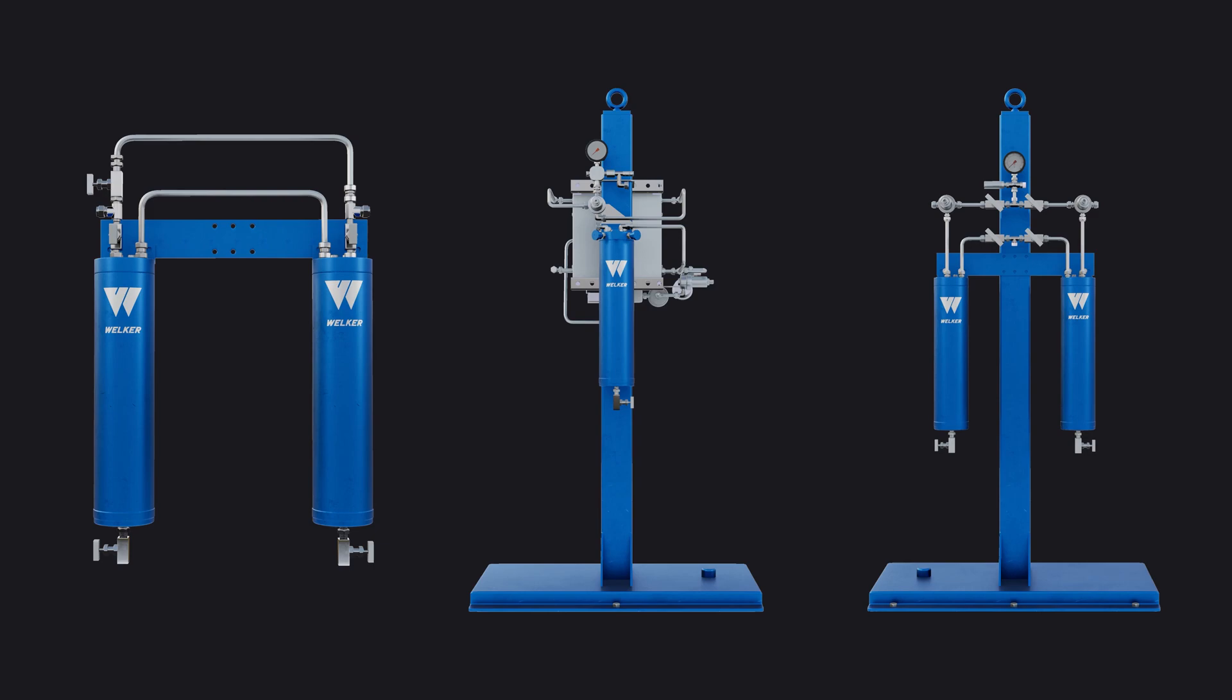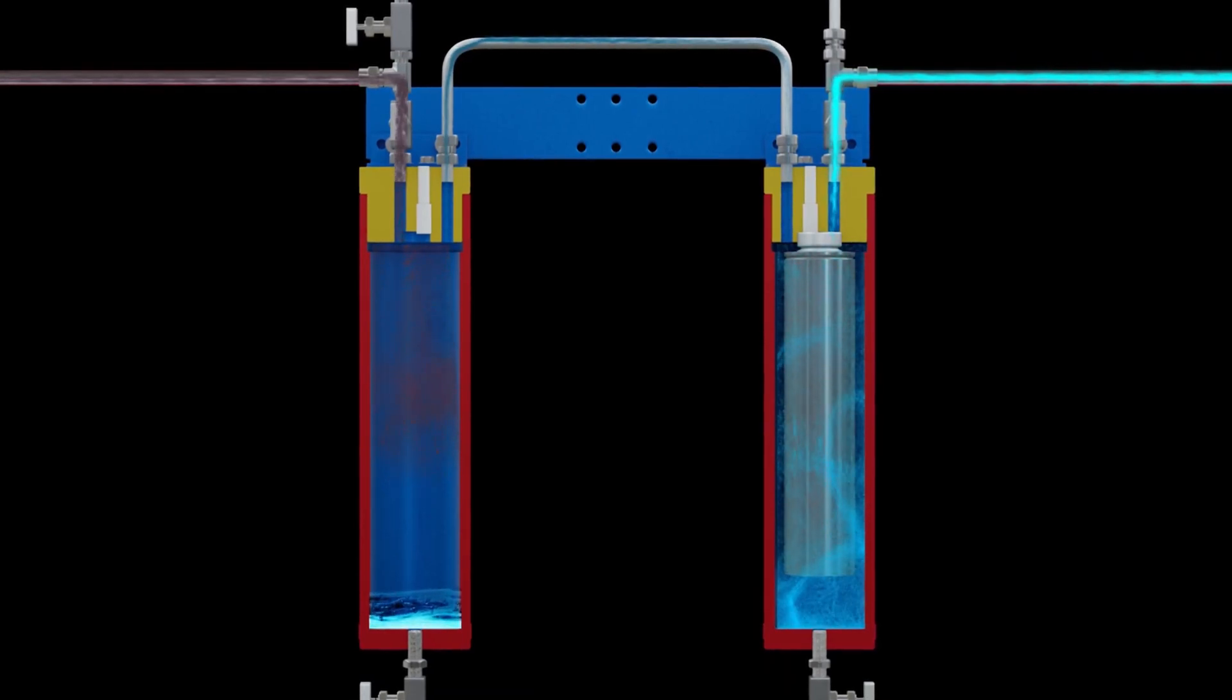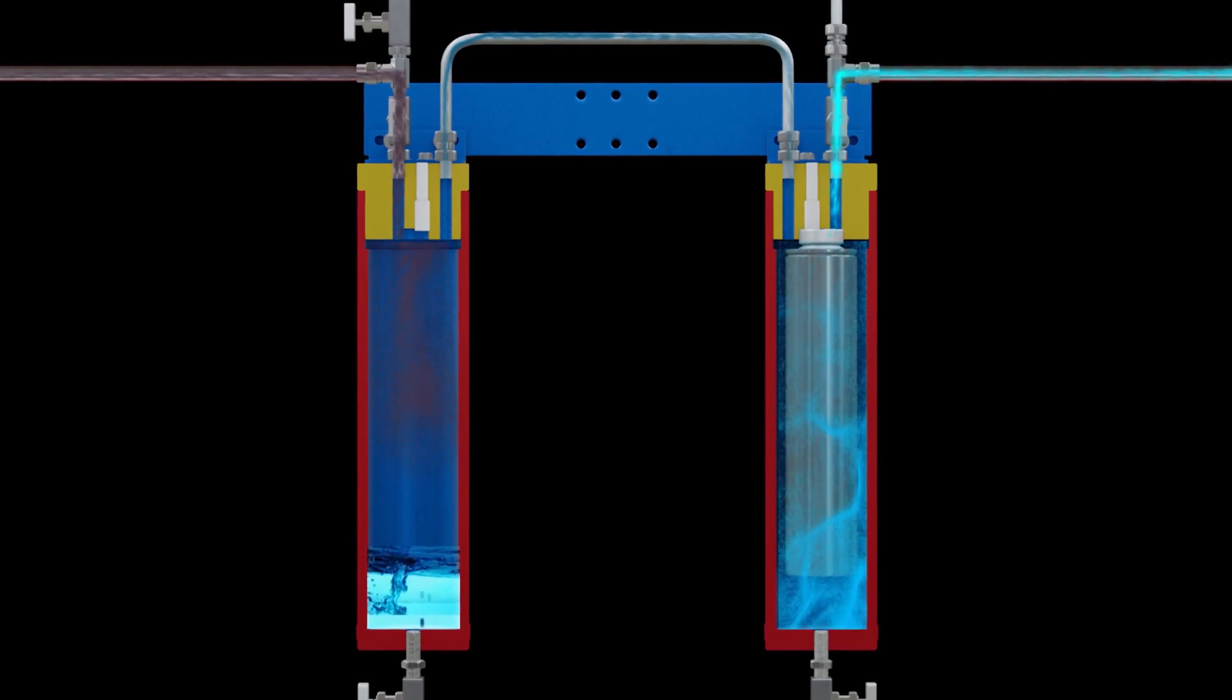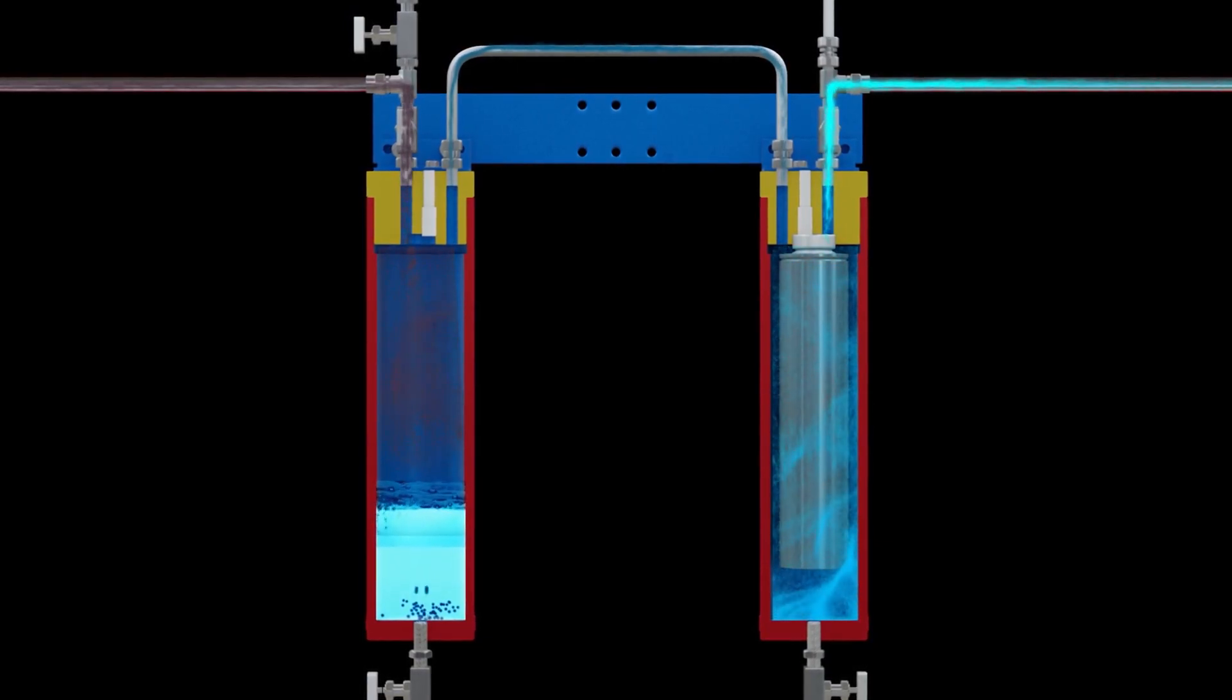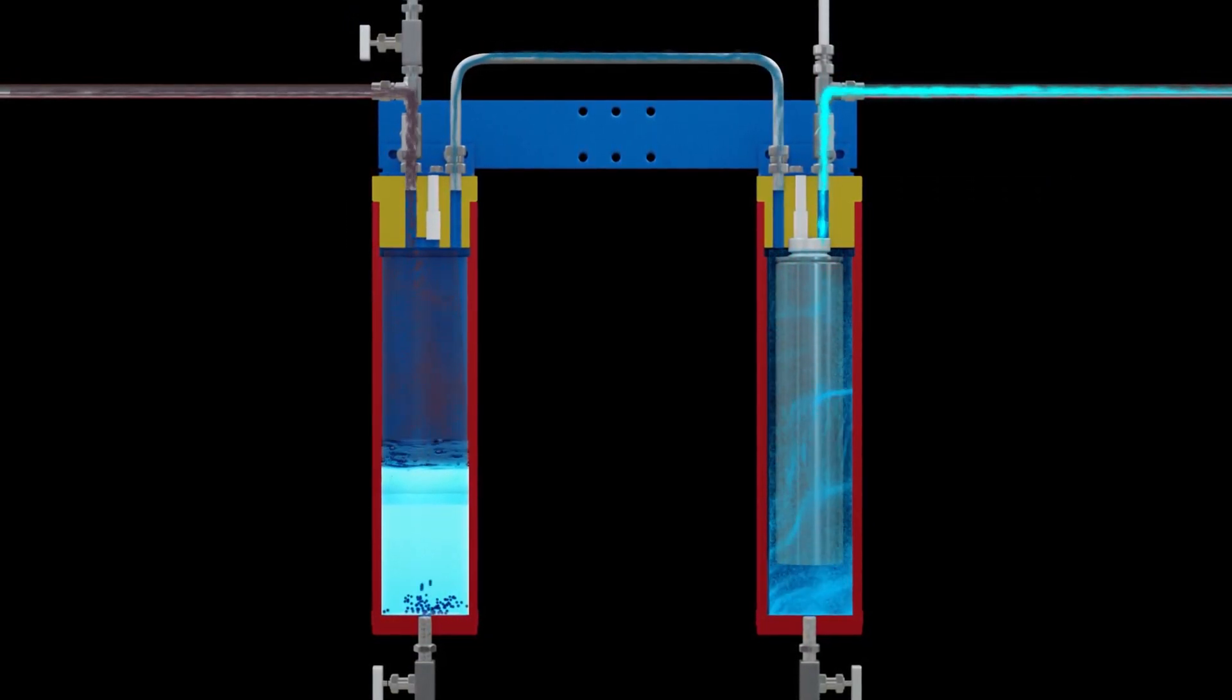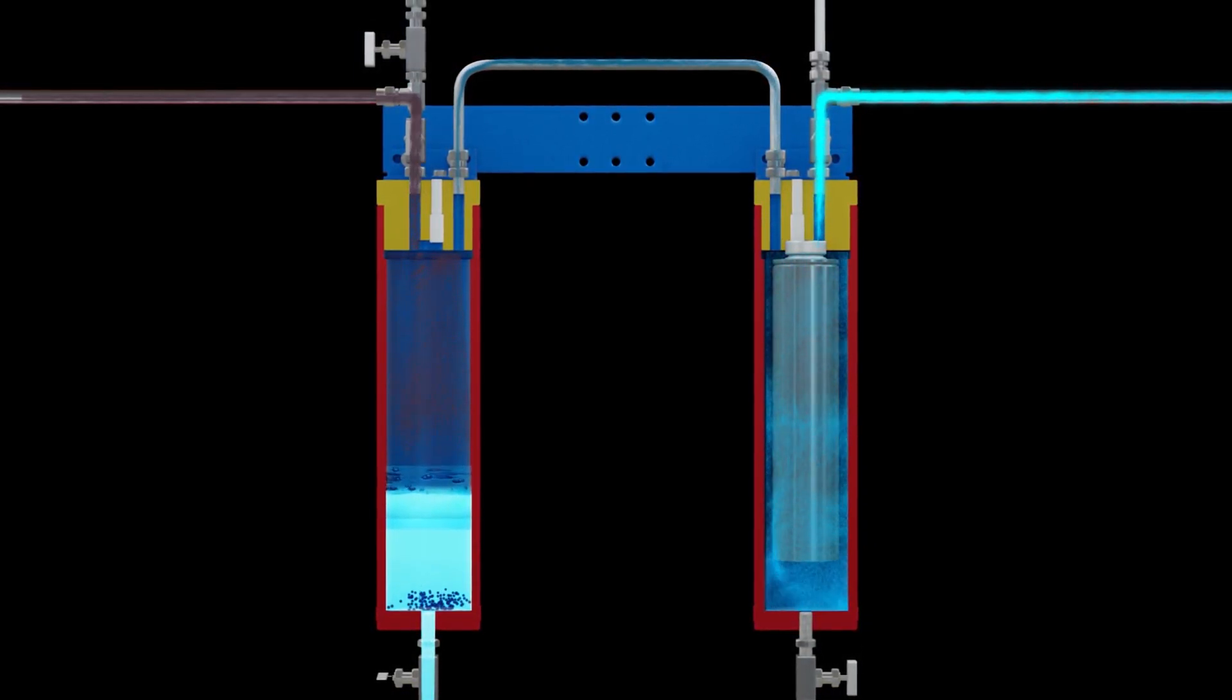The Clean Flow Basic offers contaminant and liquid removal. Pipeline gas flows freely through the liquid dump, but aerosols and free liquids are separated from the stream. The filter dryer removes contaminants from the dried gas before feeding the downstream instrument. Gravity causes the separated liquids to fall to the bottom of the liquid dump where they collect until the unit is drained.